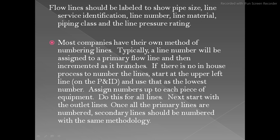If there is no in-house process to number the lines, start at the upper left line on the P&ID and use that as the lowest number. Assign numbers up to each piece of equipment — once they complete the process line numbering, they then start with the utility line numbers. Do this for all lines.